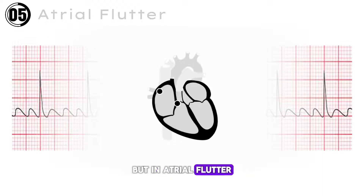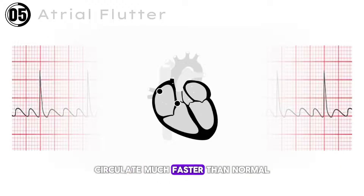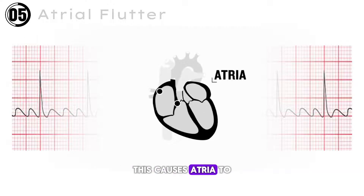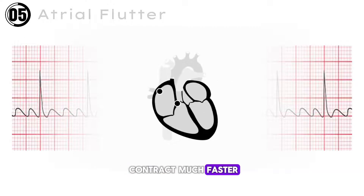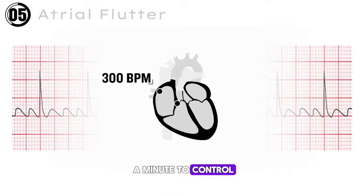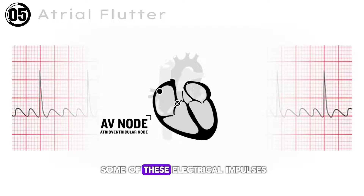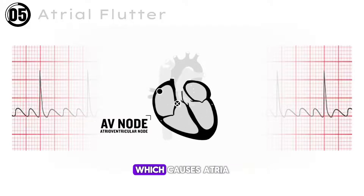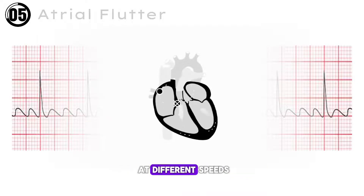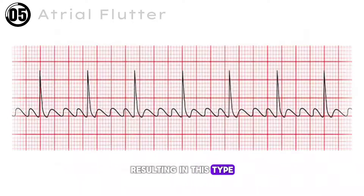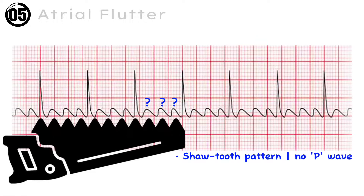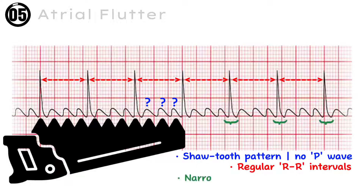But in atrial flutter, electrical impulses circulate much faster than normal around the atria, causing atria to contract up to 300 times a minute. To control the heart rate, the AV node blocks some of these impulses, causing atria and ventricles to contract at different speeds. In atrial flutter, there is no P wave, but a sawtooth pattern is seen due to repeated circulation of electrical impulses in the atria. The RR intervals are regular, and QRS complexes are narrow — less than 80 milliseconds.